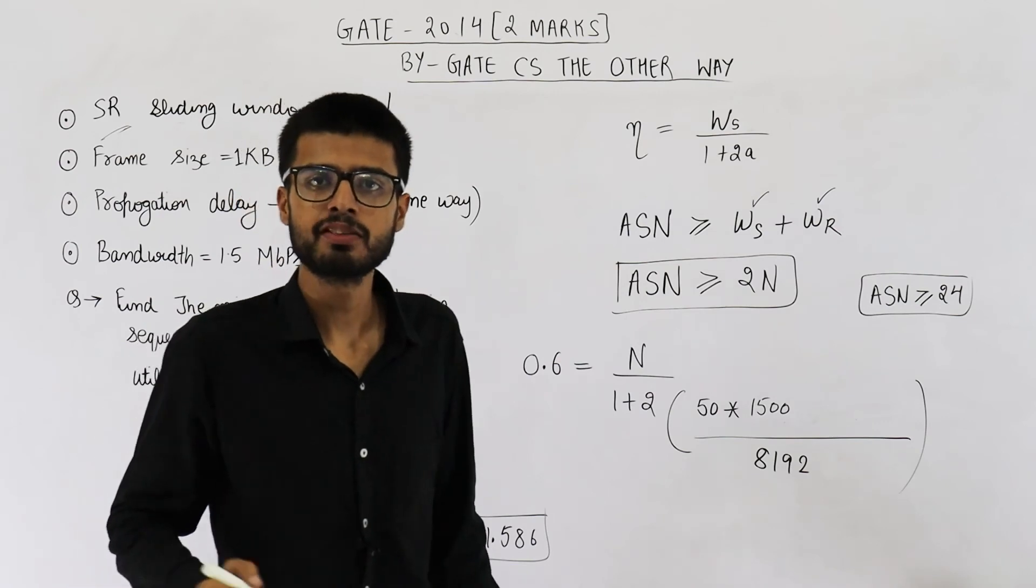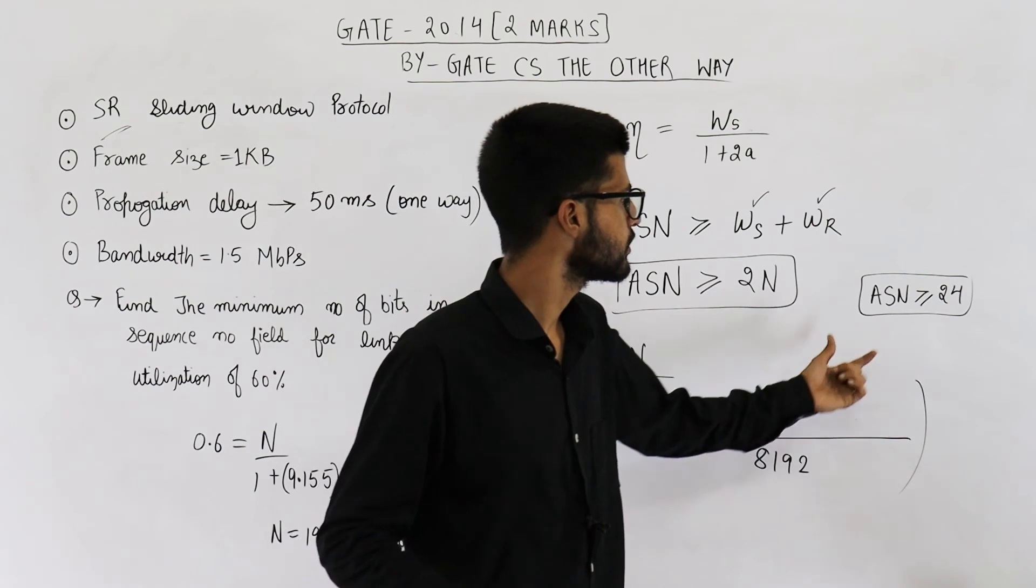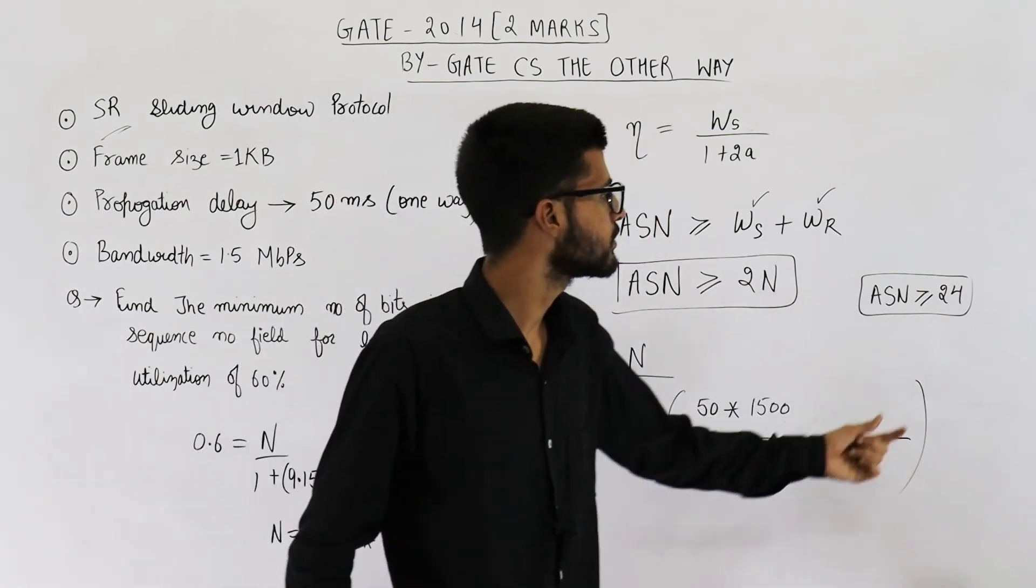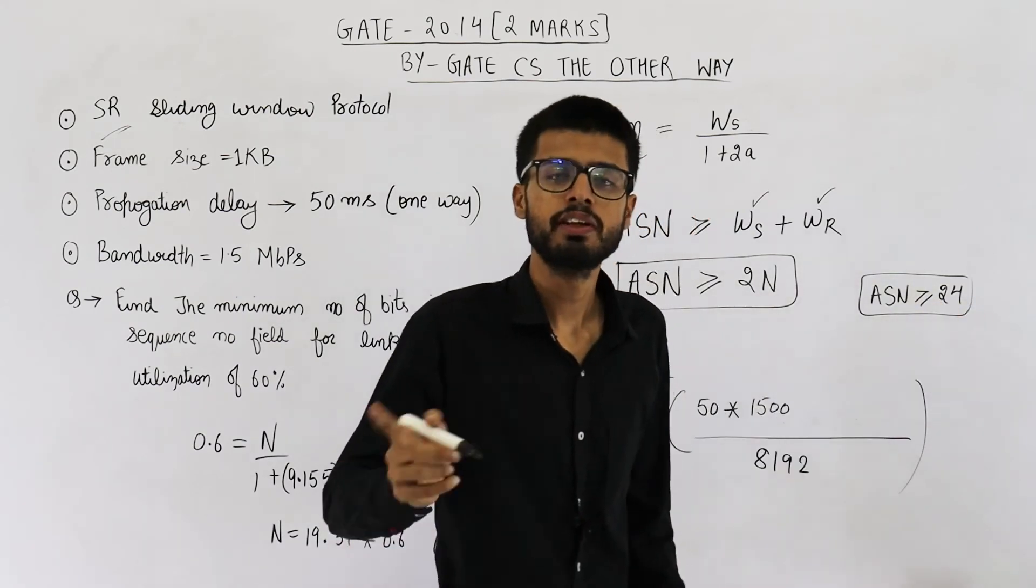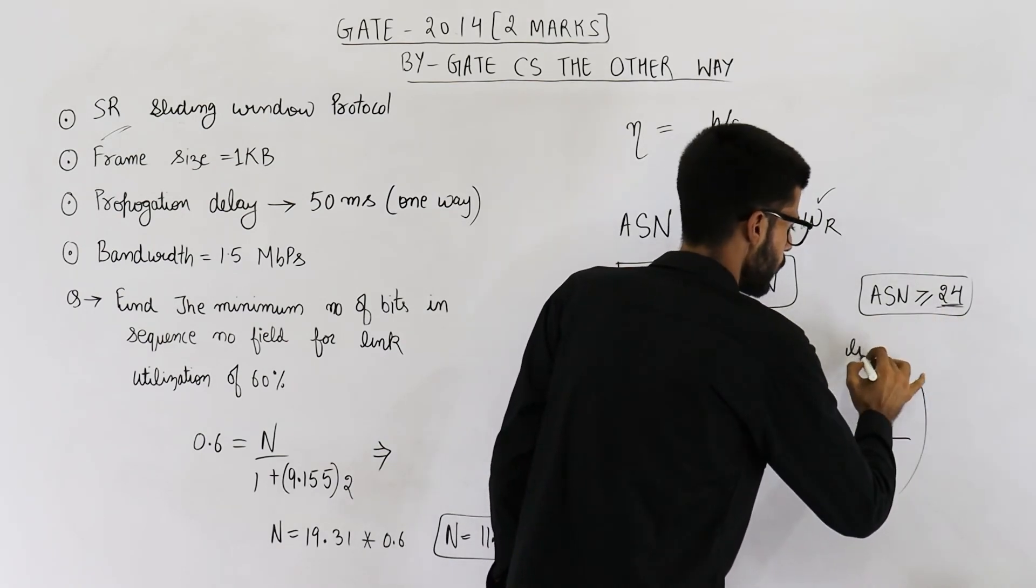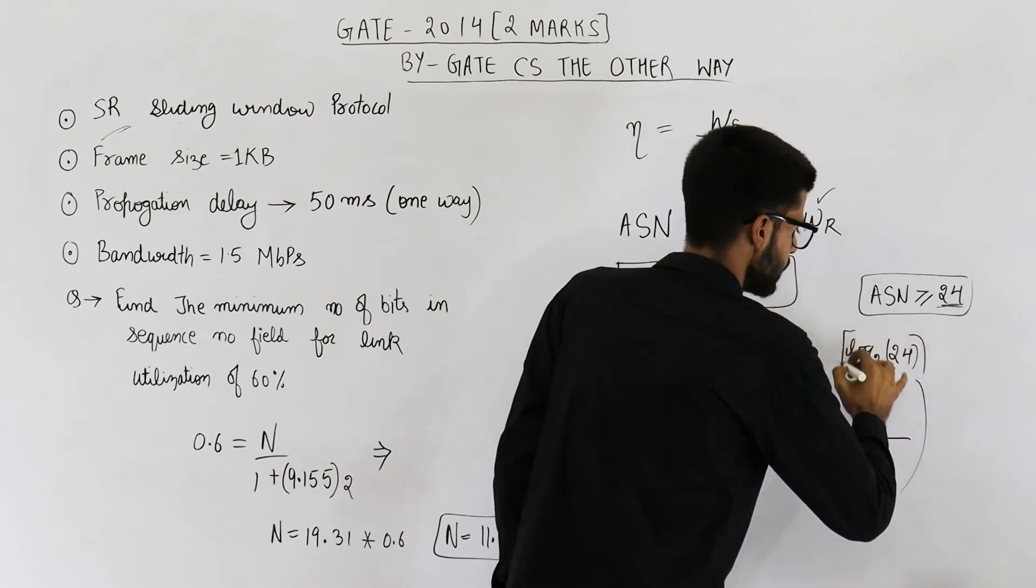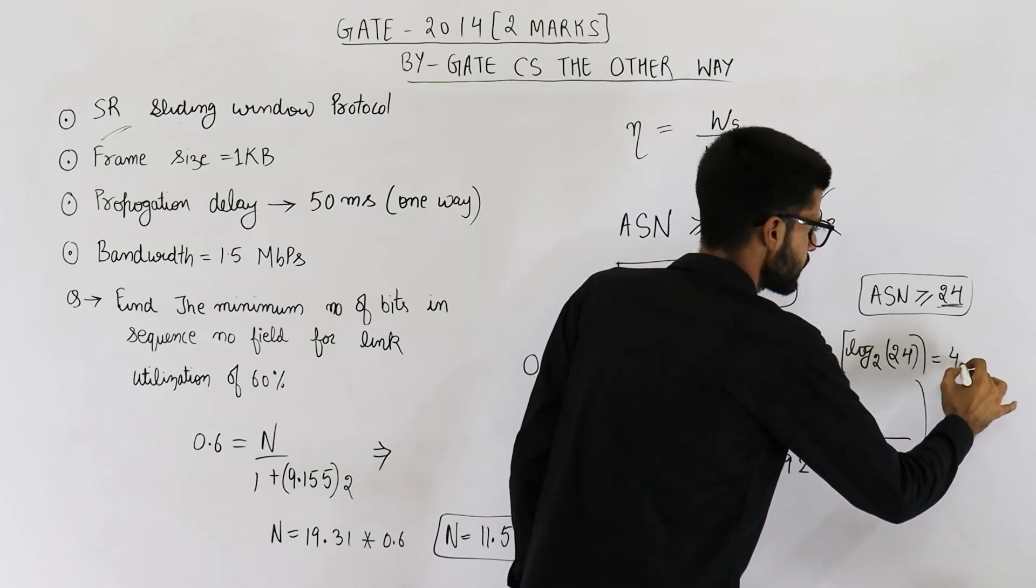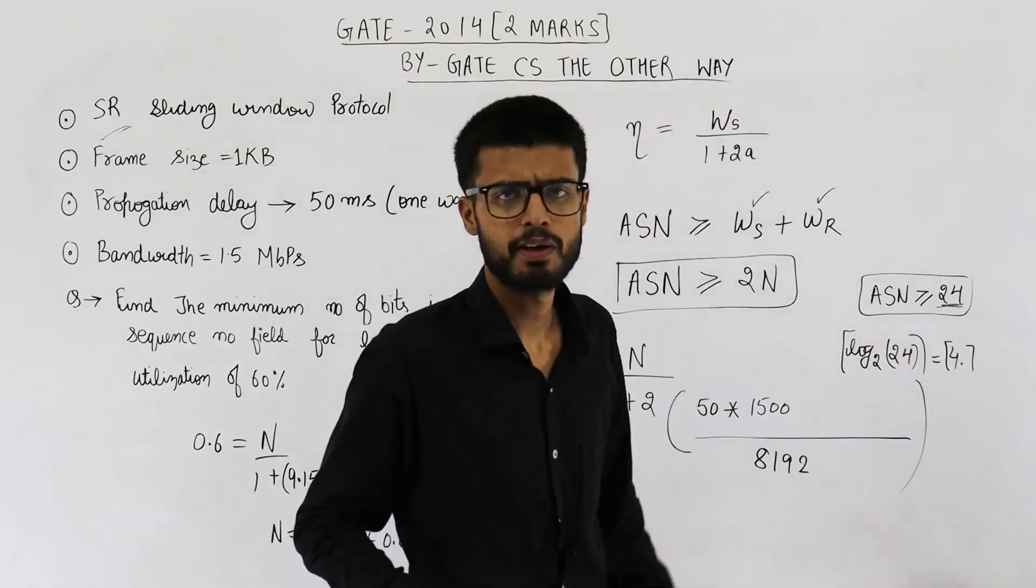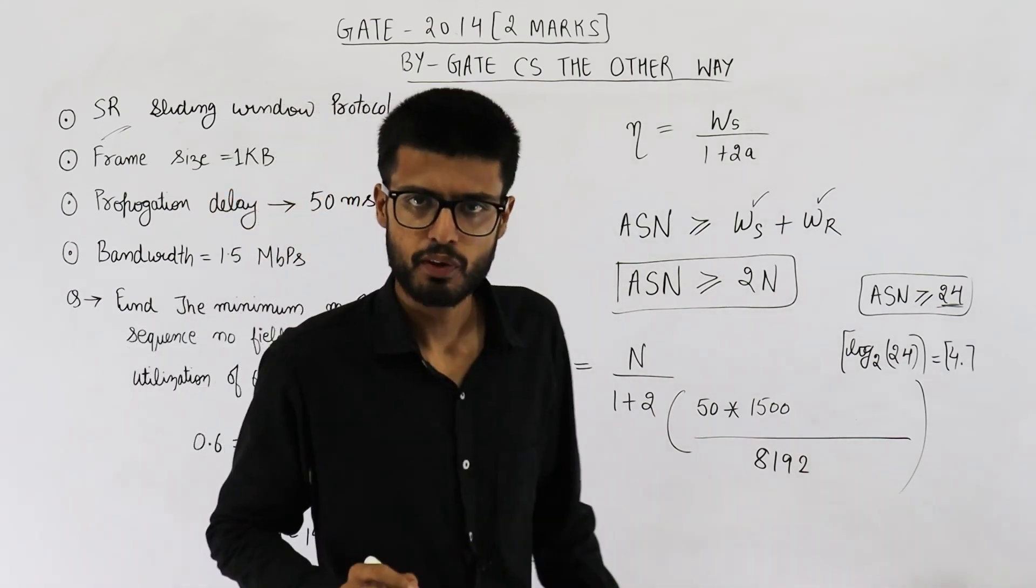Now you can find out how many bits will be there in sequence number field. So minimum number of bits in sequence number field will be 5. Because with 4 bits you can generate only 16 sequence numbers. So we need one more bit. That means 5 bits will be required. Also you can just take log of this value log to the base 2, 24 and its ceiling. So this will be 4 point something. It will be 4 point something and when you take ceiling you will get 5. So answer to this question is 5 bits.